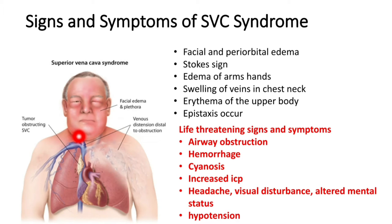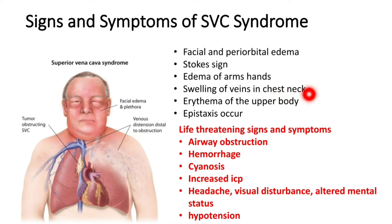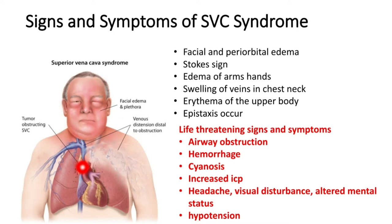Another sign is collar sign — as there is no venous drainage from the neck region, the neck can become swollen, leading to tightness of the shirt or blouse collar. There is also edema of the arms and hands, and swelling of veins in the neck and chest region, as the obstruction of the superior vena cava prevents venous return from the upper half of the body.